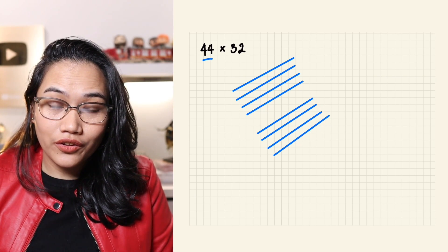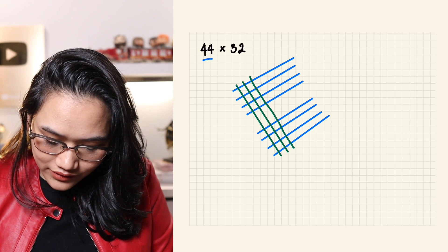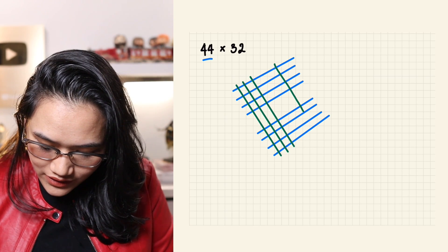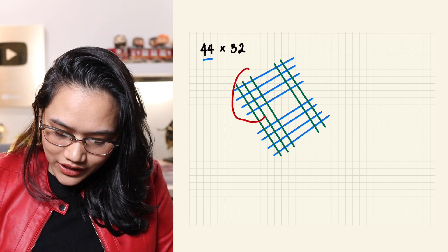Next, we're going to draw 32 represented by 1, 2, 3 lines here on this side. And 2 lines here: 1, 2.